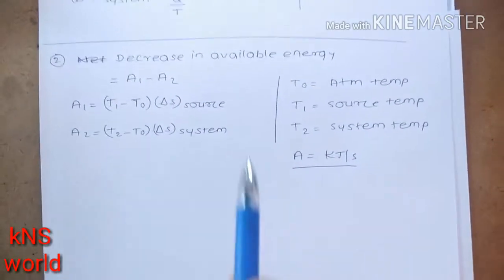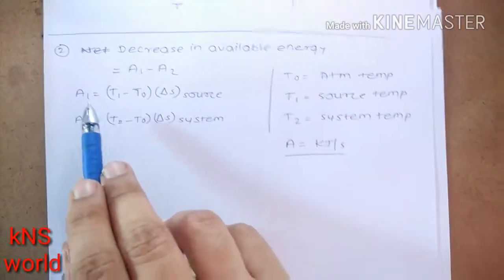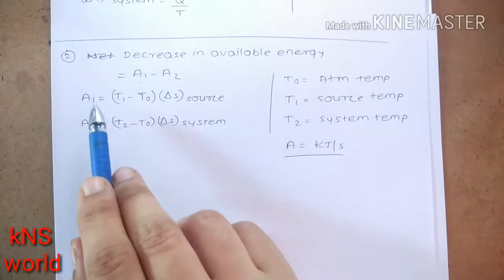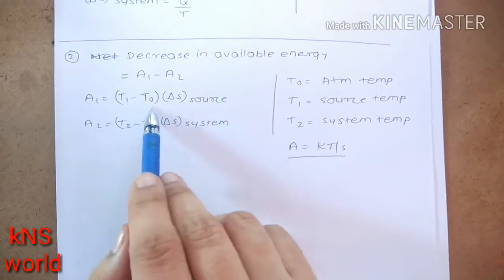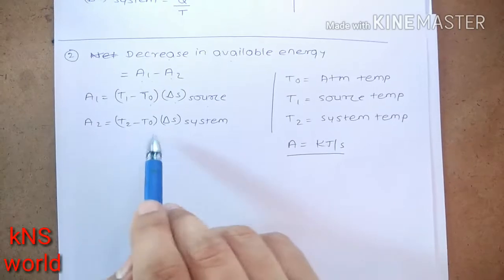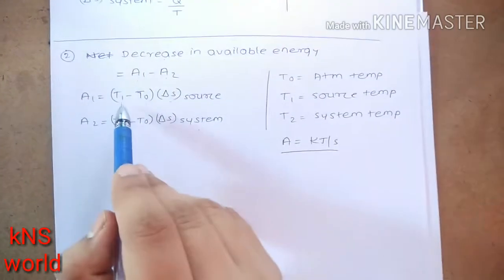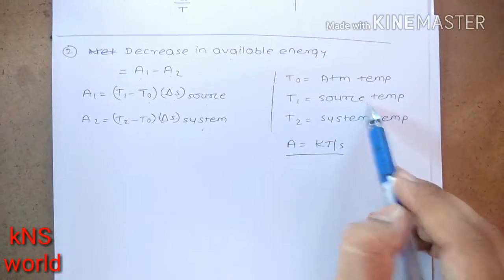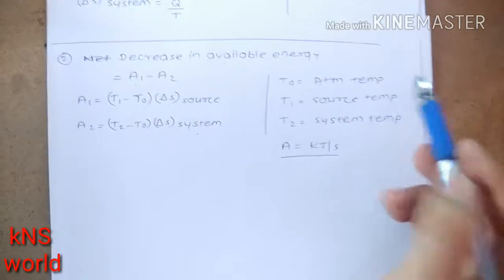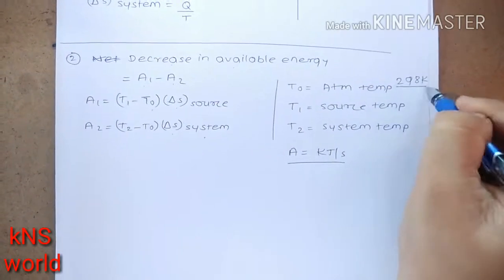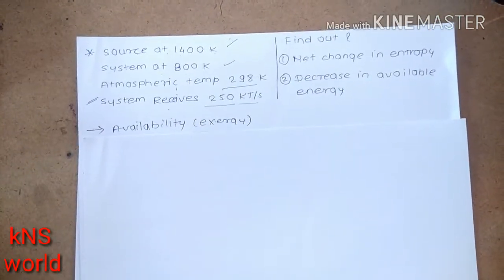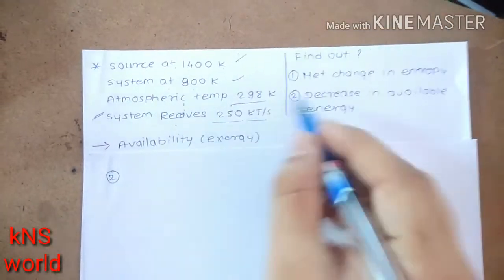For the second part, decrease in available energy is found by A1 minus A2, where A1 is for the source and A2 is for the system. A1 equals (T1 minus T0) times delta S_source, and A2 equals (T2 minus T0) times delta S_system. Here T1 is 1400 K, T2 is 800 K, and T0 is the atmospheric temperature, 298 Kelvin. The unit of availability is kilojoules per second.